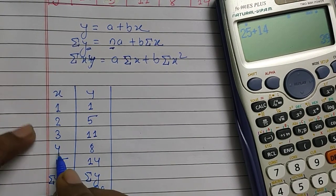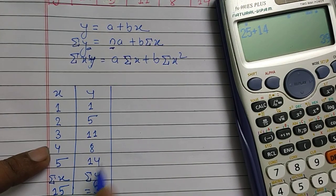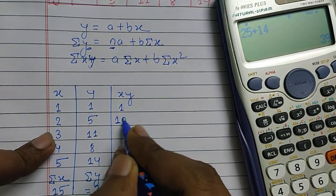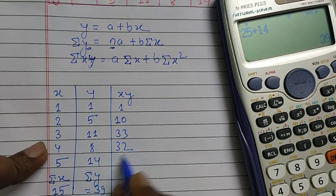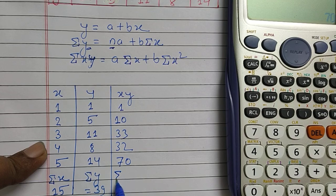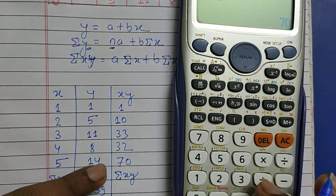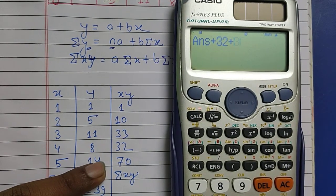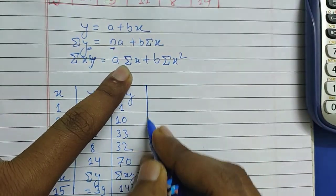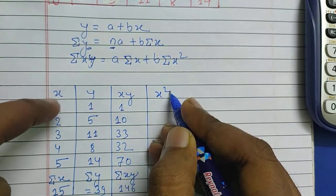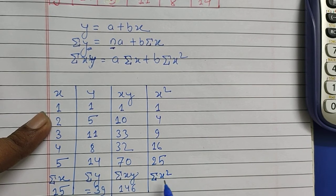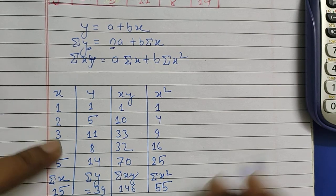Summation x = 1 + 2 + 3 + 4 + 5 = 15. For summation xy, we compute each product: 14×5 = 70, and adding the remaining products: summation xy = 70 + 32 + 33 + 11 = 146. For x², the values are 1, 4, 9, 16, 25, and summation x² = 55.